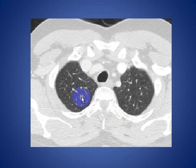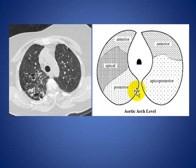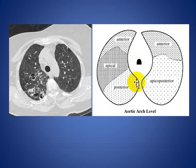At Level 1, above the aortic arch, we only see the apical segment of the right upper lobe and part of the apical segment of the left upper lobe. This is the second level, at the level of the aortic arch.